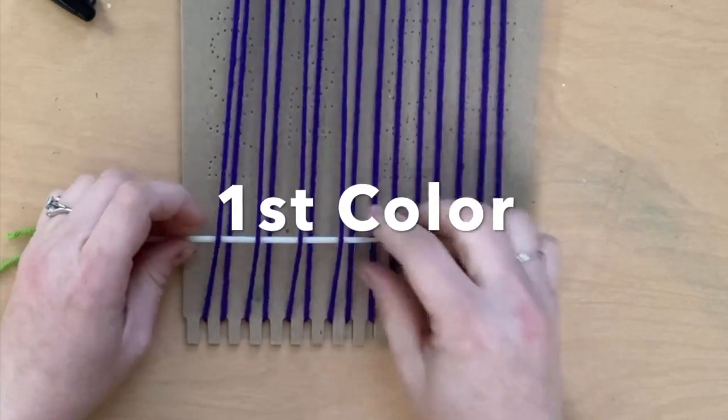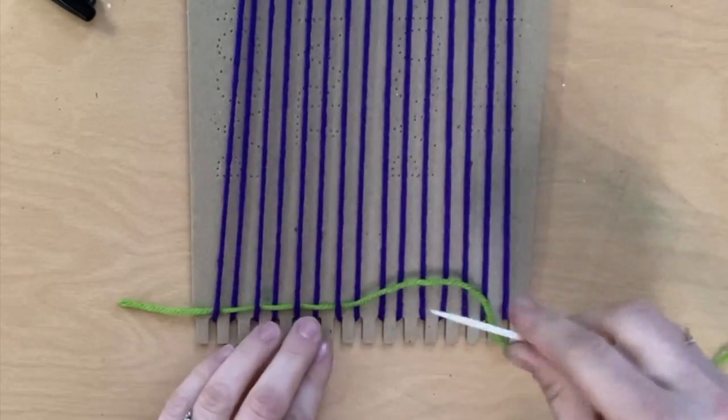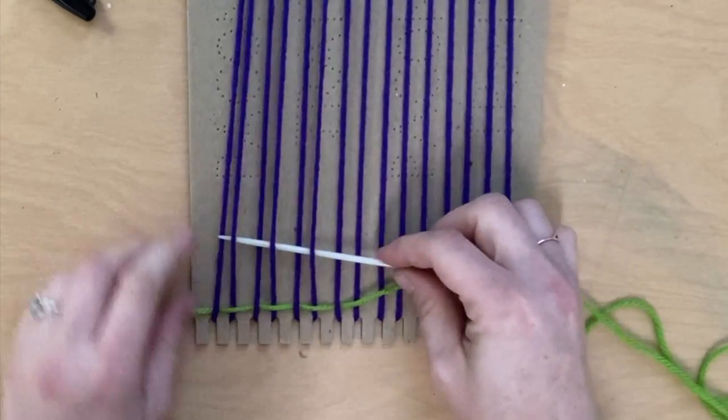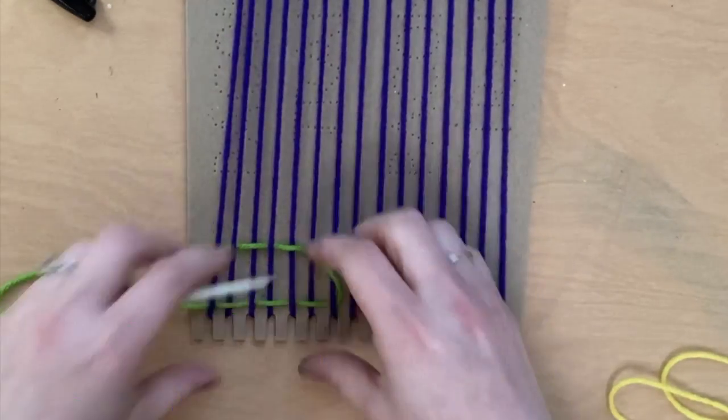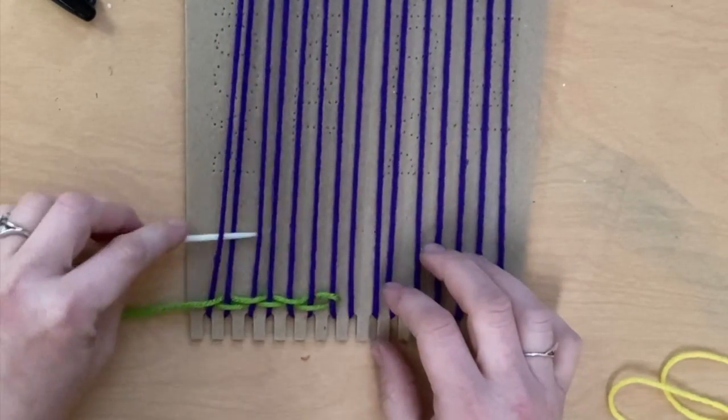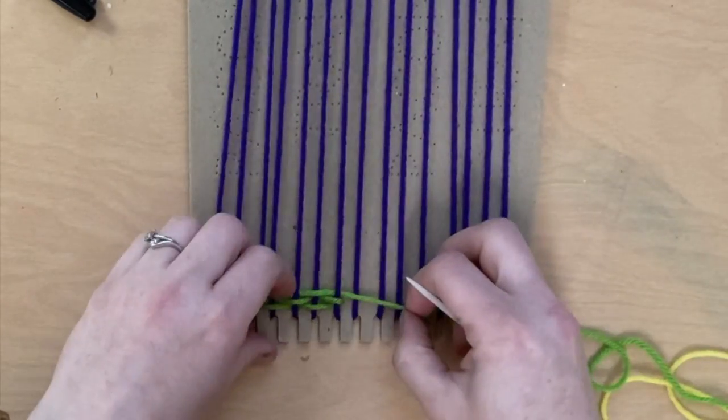To begin the interlocking weaving method, start weaving but don't weave all the way across. Choose which warp threads you want to skip, then weave back in the same direction you came from.